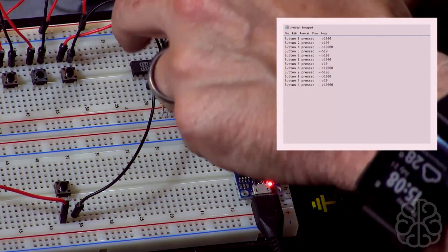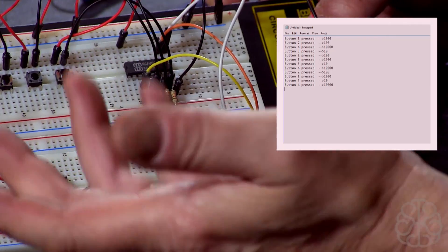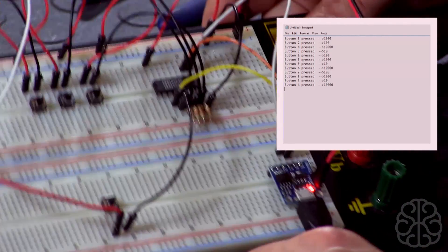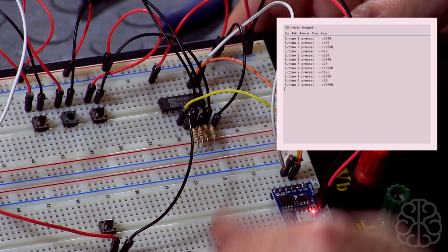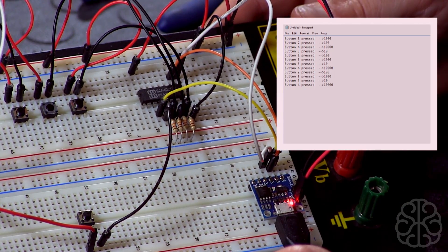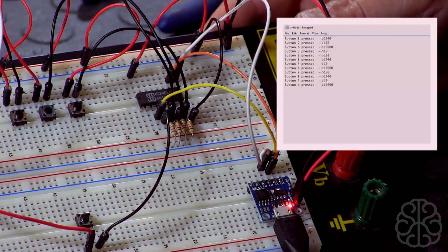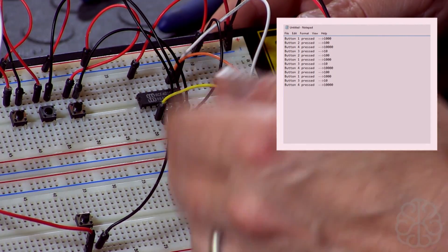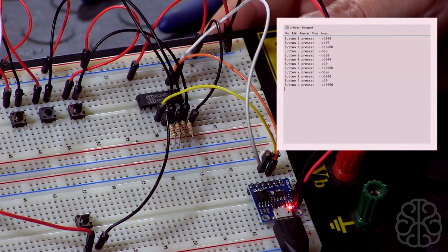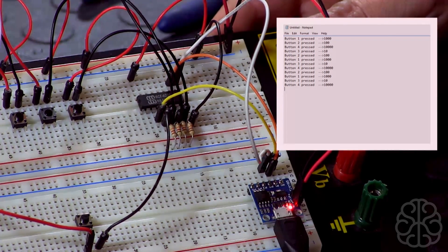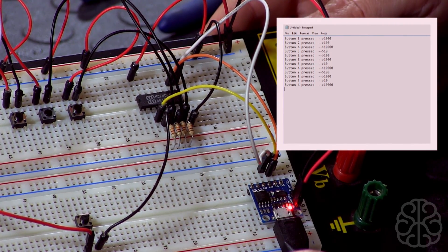We're using four here but you can use up to eight per chip. You could connect chips in parallel to have more, basically up to 16 if you use two. I hope this is something you can use in a future project. It's always good to have more inputs, especially on the DigiSpark that doesn't have a lot of them.